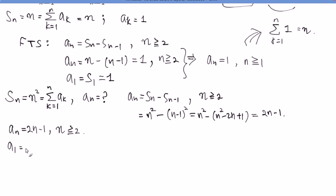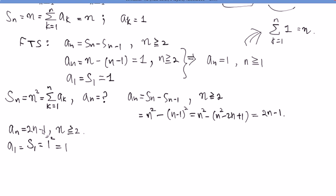Now check a_1: by definition, a_1 equals S_1 equals 1 squared equals 1. The formula 2n minus 1 when n equals 1 gives 2(1) minus 1 equals 1 — it happened to coincide, though there are examples where they don't. So by looking at both cases, we realize a_n is actually just 2n minus 1 for n greater than or equal to 1. We found the formula.